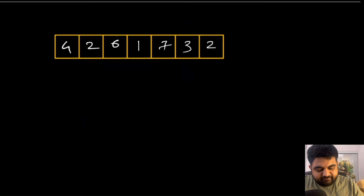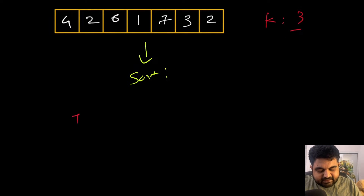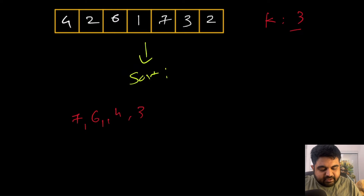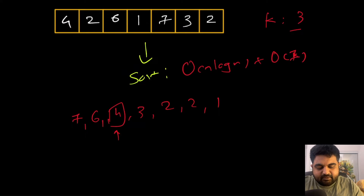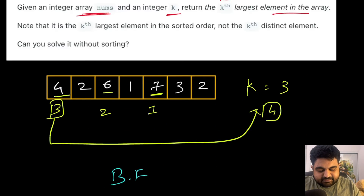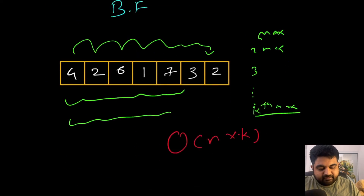The second solution is that if we sort the given input, finding the kth element becomes very easy. After sorting, the largest element is first, and we can easily find the third largest element just like that. Sorting will take O(n log n) time, and finding the element will be essentially instantaneous since it's an array. However, the issue is we are explicitly told to solve this problem without sorting.